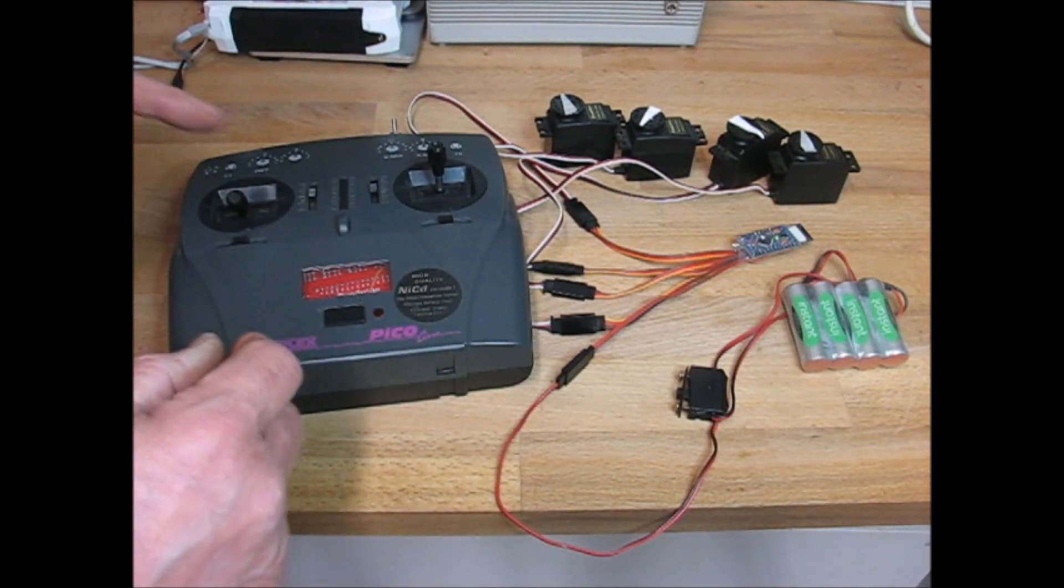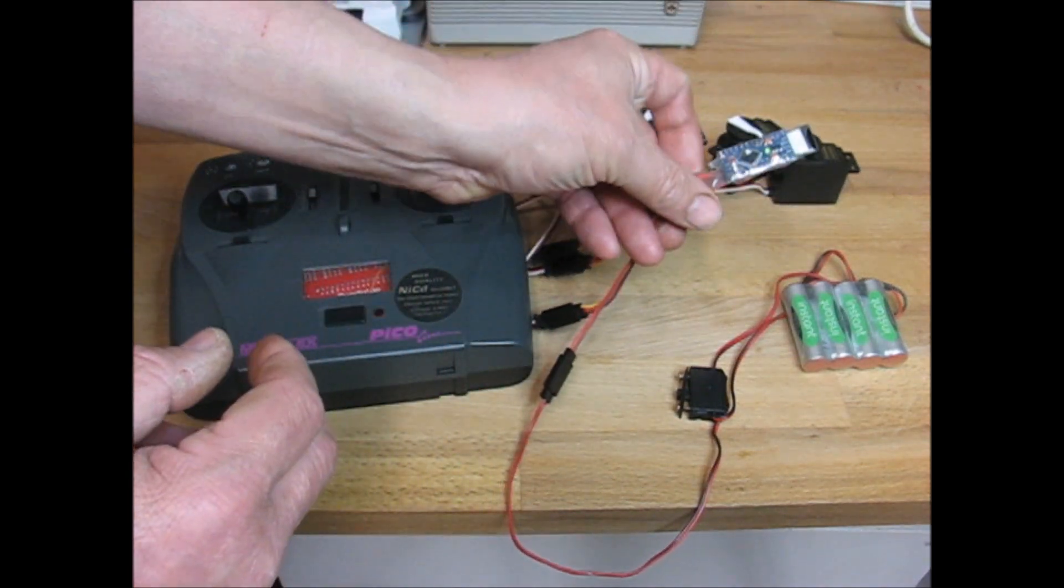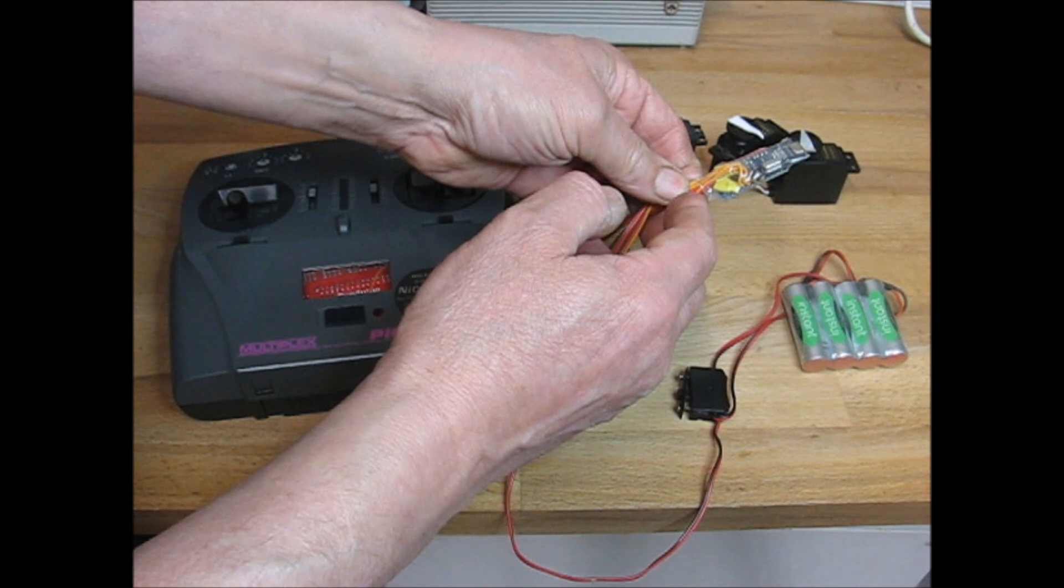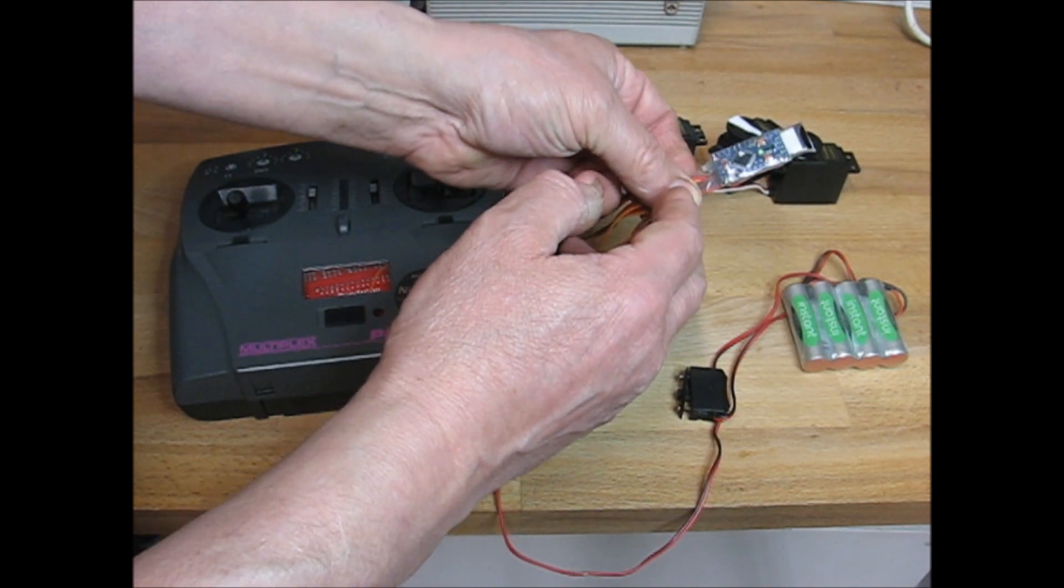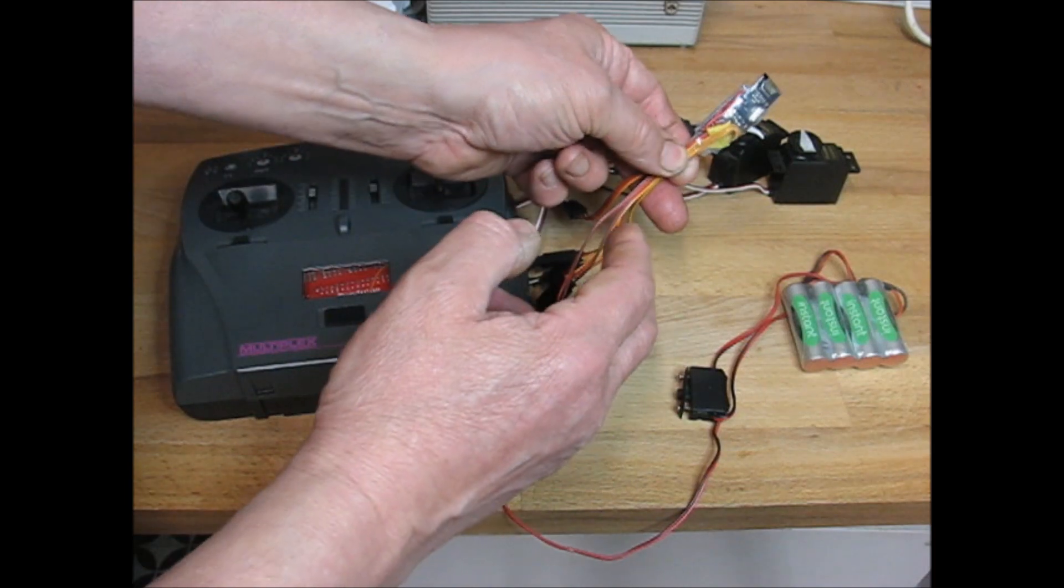Oh, failsafe—it has a programmable failsafe. The receiver you have to build yourself, unfortunately, but it's just a Pro Mini with an NRF24 on the back. It's a bit fiddly, but it just takes about 20 minutes to build. It's not complicated at all.